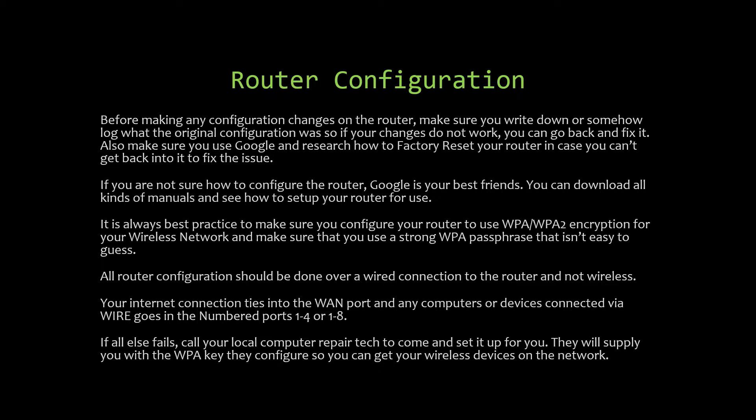It's always best to configure your router's wireless access point to use WPA or WPA2 encryption. Make sure you use a strong WPA passphrase that isn't easy to guess — don't use your telephone number, address, or anything easily associated with you. All router configuration should be done over a wired connection, not wireless, because it's very easy to lock yourself out wirelessly.